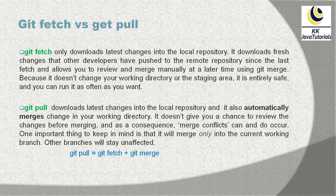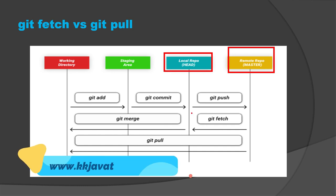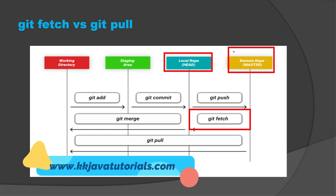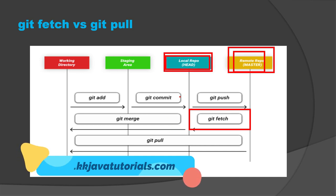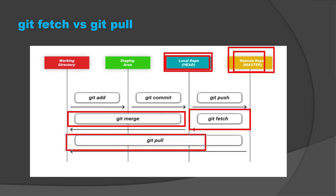Let's understand the same with a pictorial diagram. Here we have a remote repository and here we have a local repository. If you do git fetch, this will bring all the changes from the remote repository to your local repository. If you then want to bring those changes to your working directory, you have to use git merge. This two-step process can be done in a single step using git pull, which internally issues two commands: git fetch and git merge.